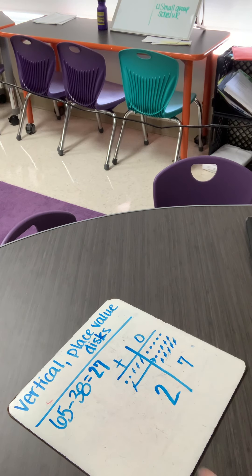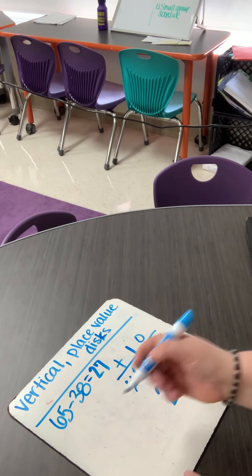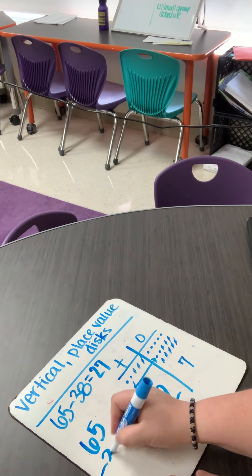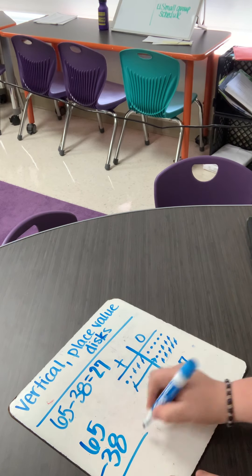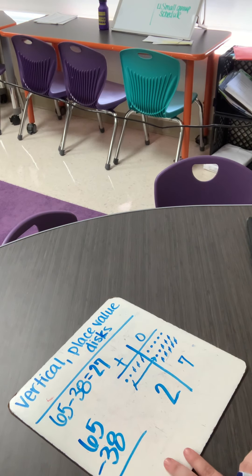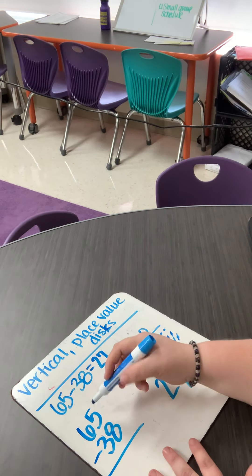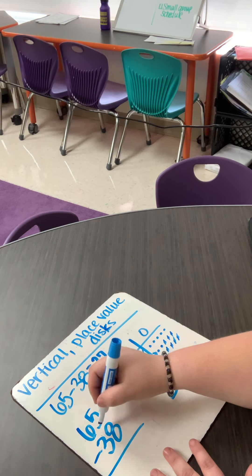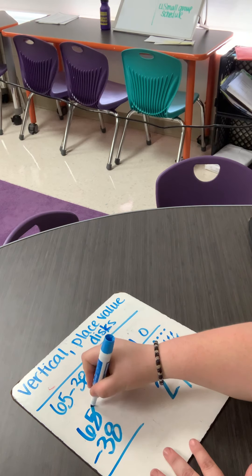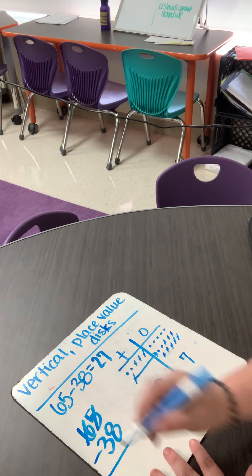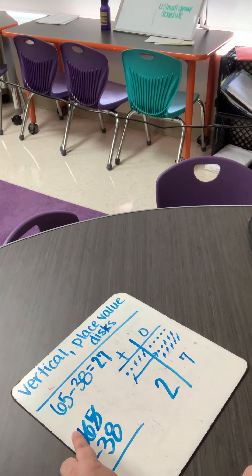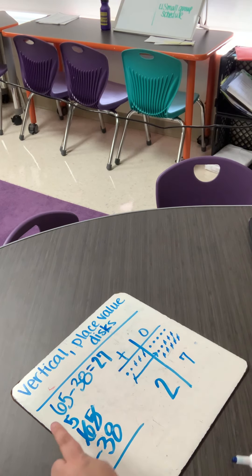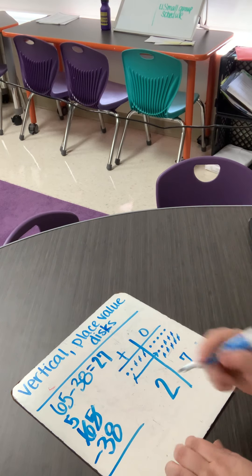Well, let's double check using the vertical method. So I have sixty-five minus thirty-eight. Okay. Well, again, I know I can't take eight from five. That's just not enough. So I mark out my one spot and I mark out my ten spot. I take one from the ten spot. So that six becomes a five and the ten spot became a fifteen.